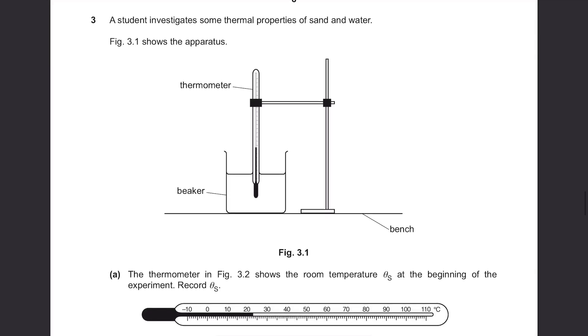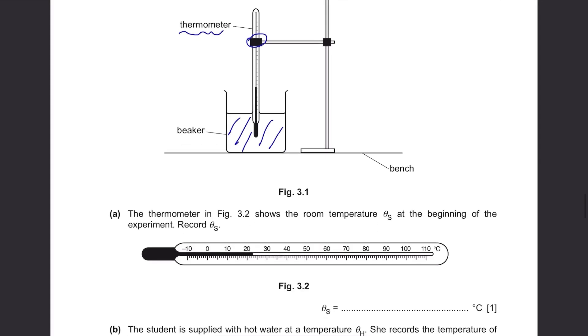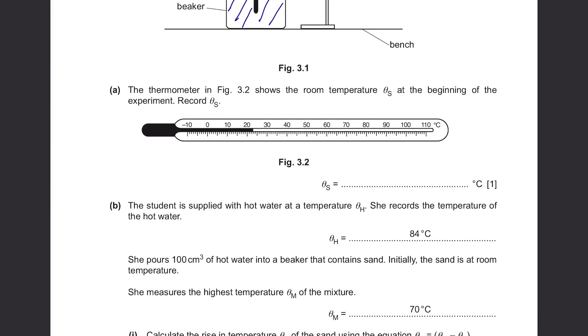Question 3. A student investigates some thermal properties of sand and water. Figure 3.1 shows the apparatus. Thermometer is held by a clamp able to measure the temperature of whatever's inside this beaker. Part A. The thermometer in figure 3.2 shows the room temperature theta-s at the beginning of the experiment. Record theta-s. Simple question, just read the thermometer, it's 23 degrees Celsius.